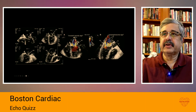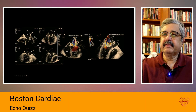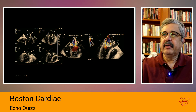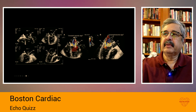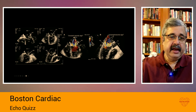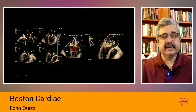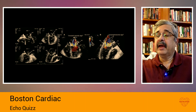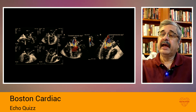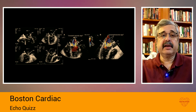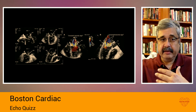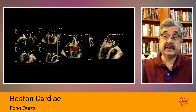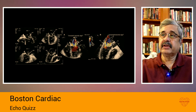Another situation: this is a flail posterior mitral leaflet — again a P1 flail — and there is an A1 problem at the same time, leading to two regurgitation jets headed in opposite directions. The key point here is that if they are not in the same axial plane, you may need to perform three-dimensional echocardiography to accurately diagnose two effective regurgitant orifice areas, and sometimes it is easy to miss one of the jets.